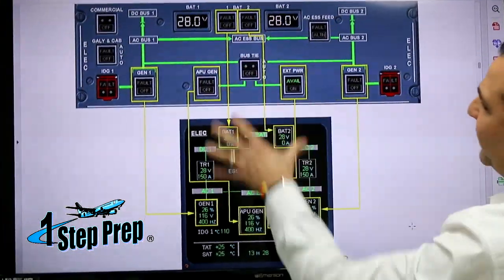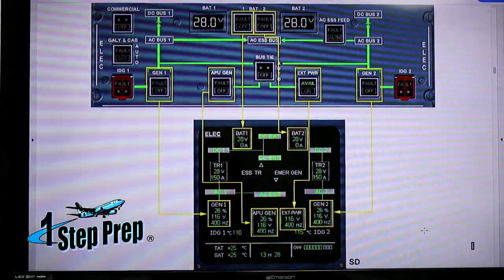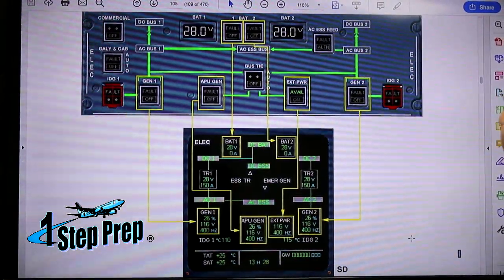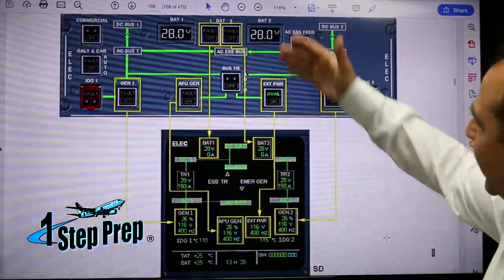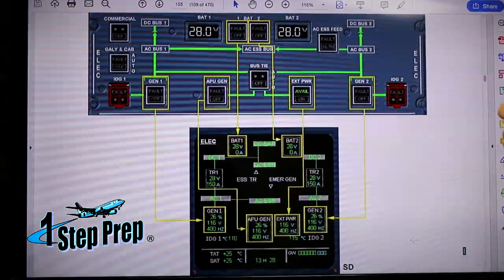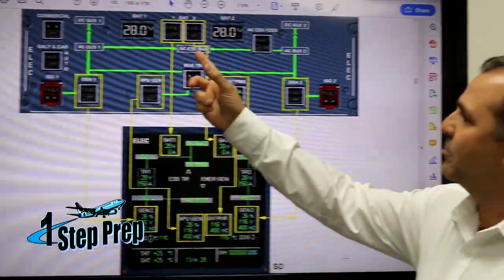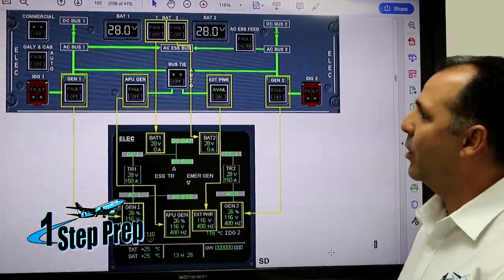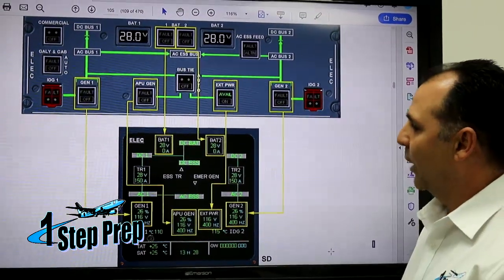Let's look at the diagram, and at the bottom we have the ECAM electrical page. We're going to be looking at both at the same time so you can see when we lose the normal power source for AC Essential Bus and what's going to be the backup power for this bus.